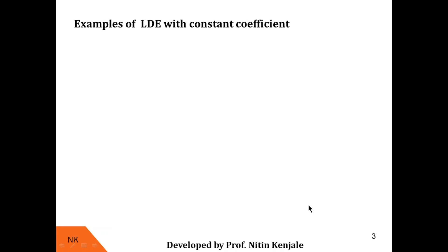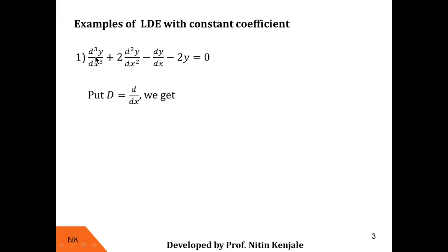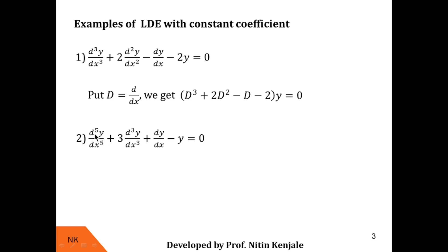Now let us see examples of LDE with constant coefficients. The first example is a third-order equation: d³y/dx³ + 2·d²y/dx² − dy/dx − 2y = 0. Taking D = d/dx, this is written as (D³ + 2D² − D − 2)y = 0. The second example is a fifth-order, degree-1 LDE with constant coefficients, where all coefficients are constants, written as (D⁵ + 3D³ + D − 1)y = 0.